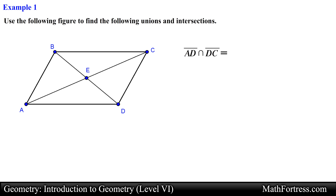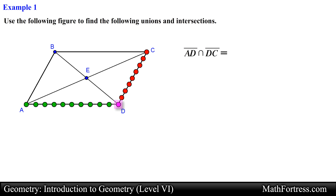In this first problem they are asking us to find the intersection of line segment AD and DC. If we think of line segment AD as the set of all points that forms this line, and similarly the set of all points that form line segment DC, we see that both lines contain one point in common — in this case point D. So the intersection of line segment AD and DC is a set containing only point D.